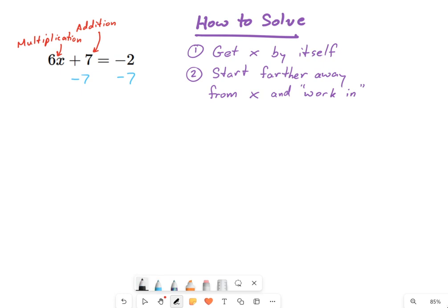So what do I get? We add up the 7 and the negative 7, and those just cross out. So I get 6x equals negative 2 minus 7, that's negative 9.